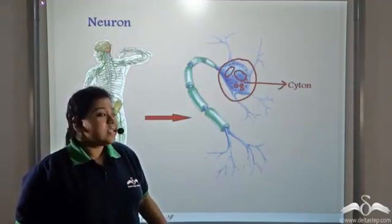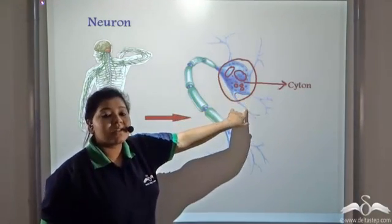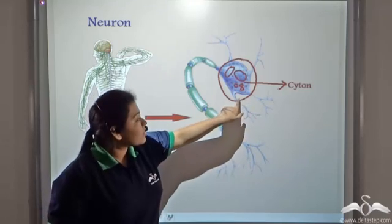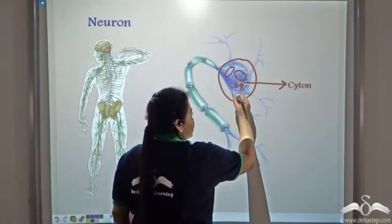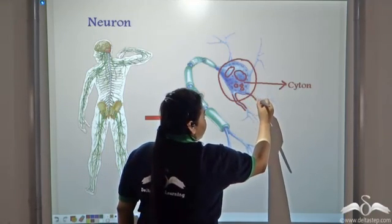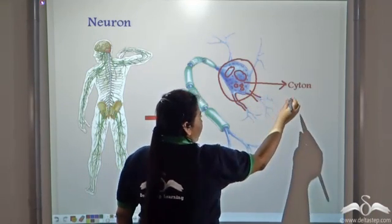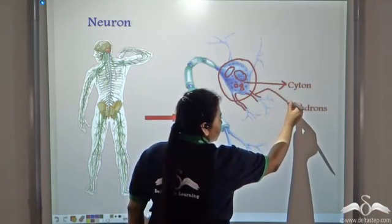Now also notice there are these processes coming out from the cyton. These processes, the thicker ones, these processes are known as the dendrons. So these are the dendrons.